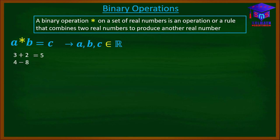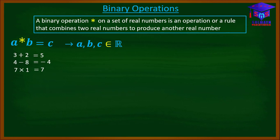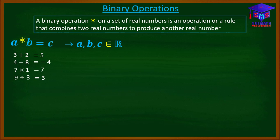Over here too, we have two real numbers, four and eight, which are being combined with the operation subtraction to produce another real number, negative four. So the binary operation in this case is subtraction. Over here too, the binary operation is multiplication, and then over here the binary operation is division.